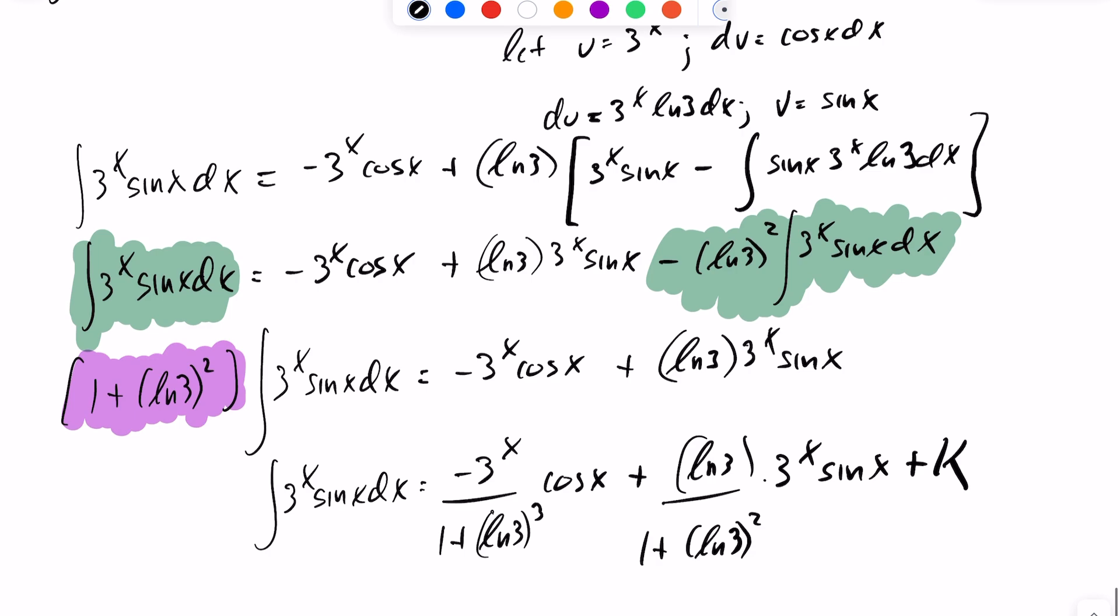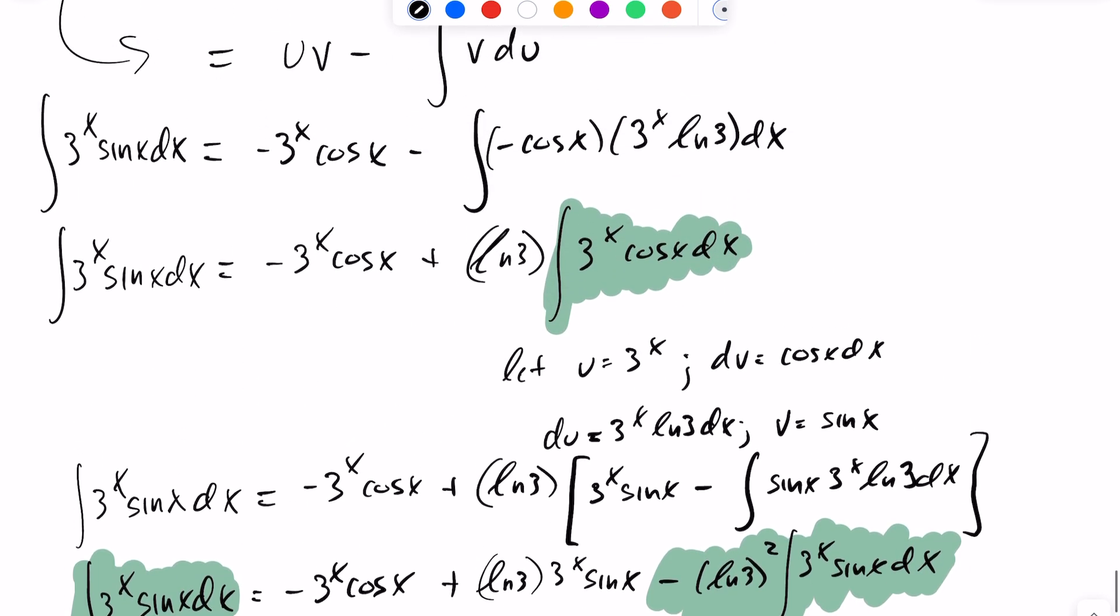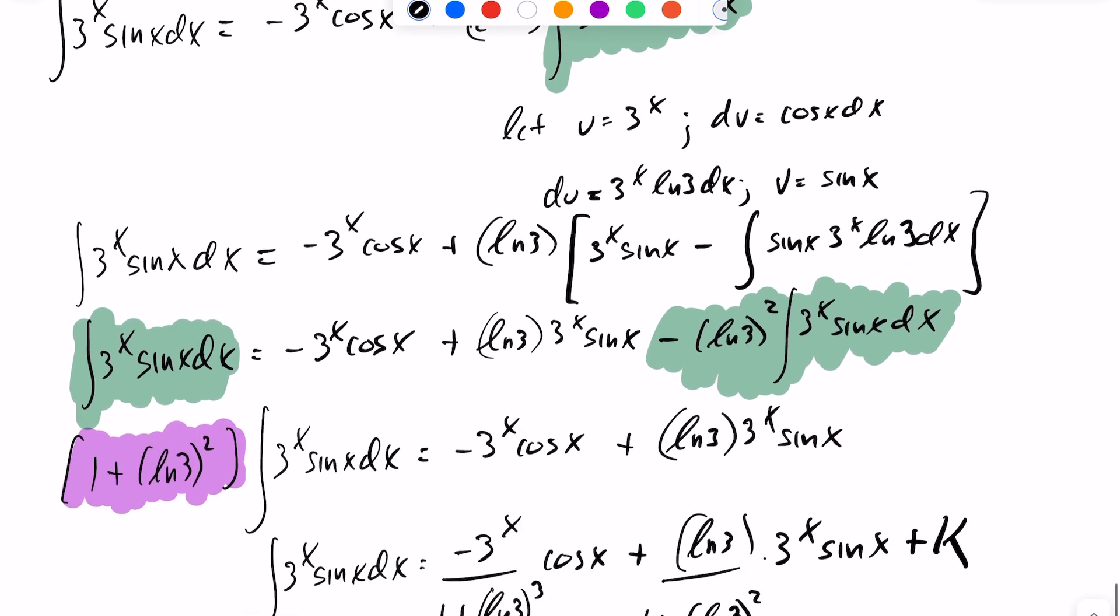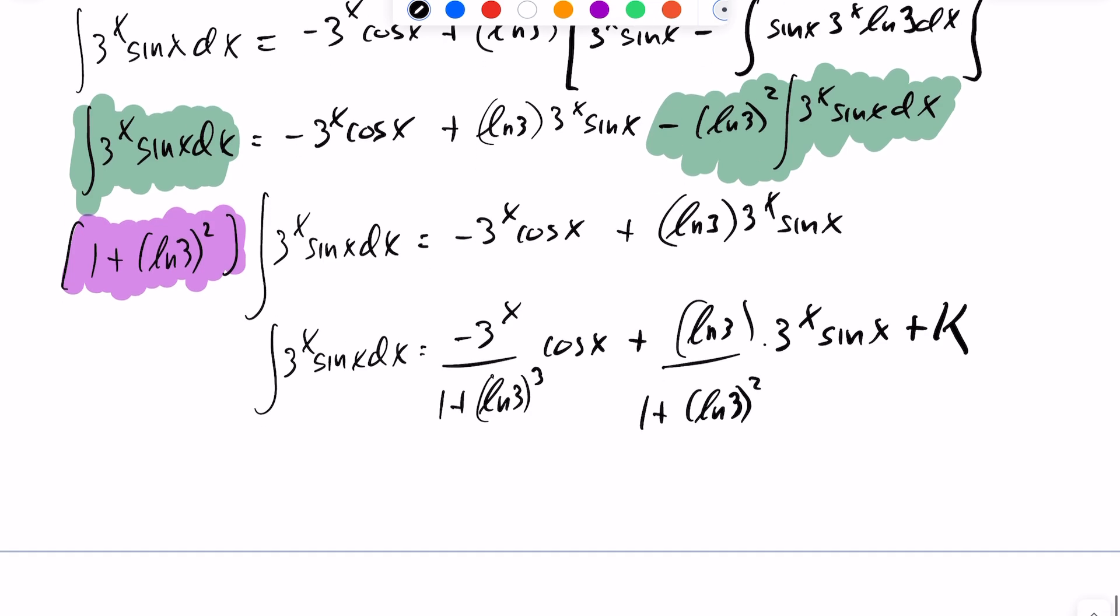You'll notice here, I actually should have put that constant term when I evaluated any of these integrals, kind of waited right to the very last minute and just put a plus C at the end. But at any rate, using integration by parts twice, we get the integral of 3^x sin(x) dx is equal to the following. Thank you.